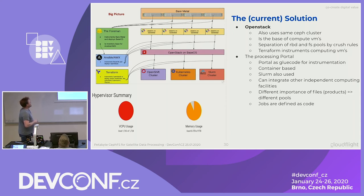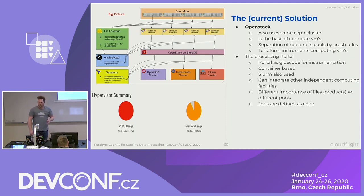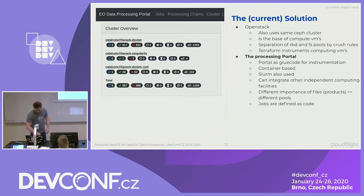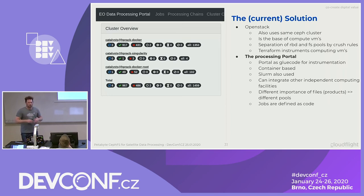We use Ansible for setting up OpenStack itself, then Ansible also for provisioning the virtual machines after Terraform creates them. We're using Foreman for inventory management and bootstrapping whole nodes. We can get a new node — whether it's a storage node, compute node, or something else — into our cluster in roughly about 10 minutes. That's the time for formatting the disk and setting up the operating system. We have colleagues who created the Glue code user interface — the processing portal — which has some quite unique features. It can integrate into other independent computing facilities.